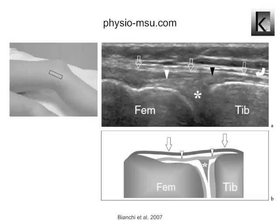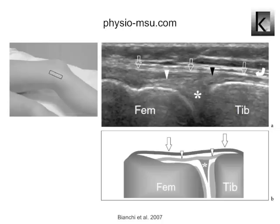Musculoskeletal ultrasound, in short MSU, can be used for assessing shape, quality and function of body structures like the MCL. In case of an MCL rupture, you can really see a widening medial joint space when applying a valgus stress to the knee. In various countries, increasing numbers of physiotherapists are using MSU for assessing soft tissues like muscles, tendons, capsules, nerves, bursae and ligaments. The validity and reliability of MSU is high, comparable to MRI.